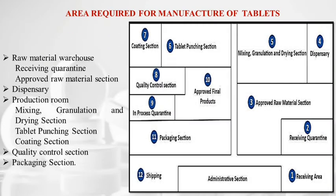The area required for manufacturing of tablets: first is the receiving area, second is the receiving quarantine, third is the approved raw material, fourth is dispensary, fifth is mixing, granulation and drying, sixth is tablet punching section, then coating section, then quality control section, then in-process quarantine, tenth is approved final products, then packaging section, and then shipping.